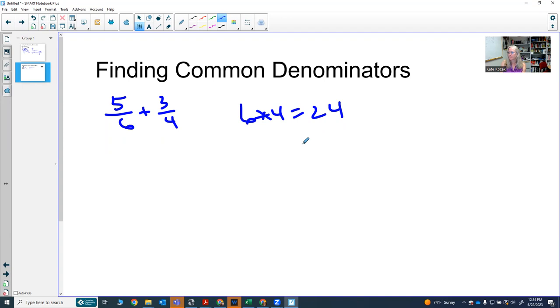Now, 24 isn't that big of a number, but it is a little big. Is there a smaller number that both 6 and 4 divide into?